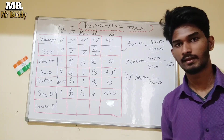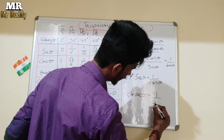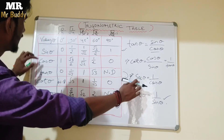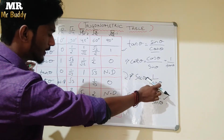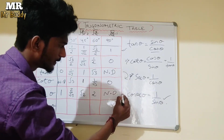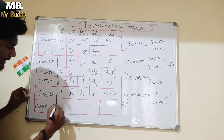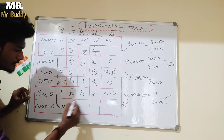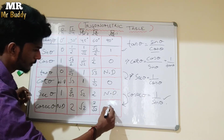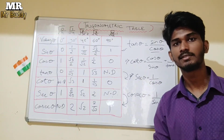At last, cosecθ — cosecθ is 1 upon sinθ. We divide 1 by each sinθ value. The easiest way is to just reverse the secθ values. Reversing gives: not defined, 2, √2, 2/√3, and 1. This method is used to find all trigonometric table values.